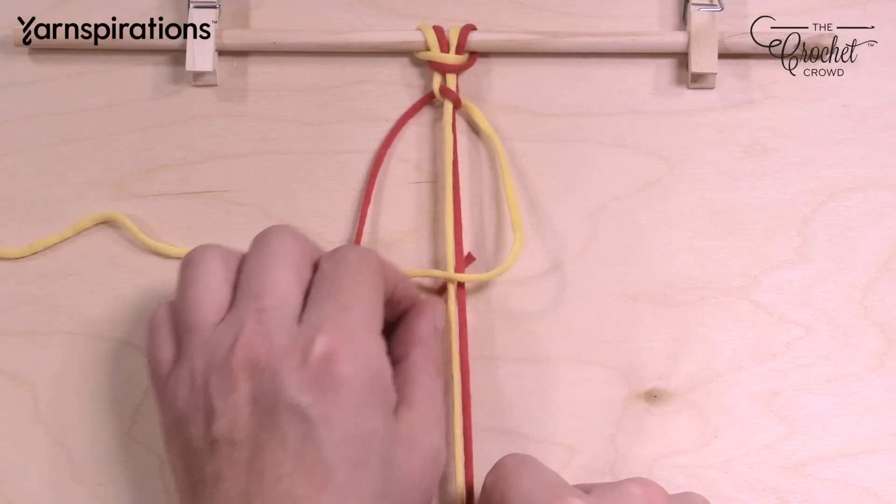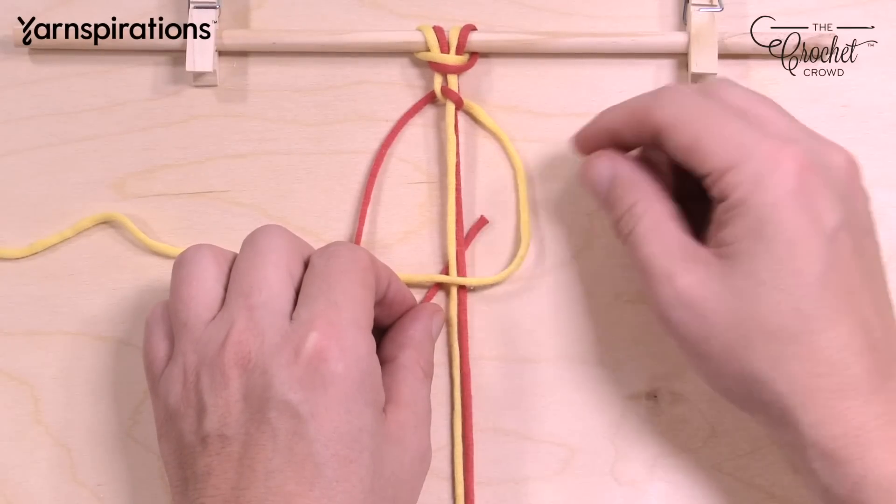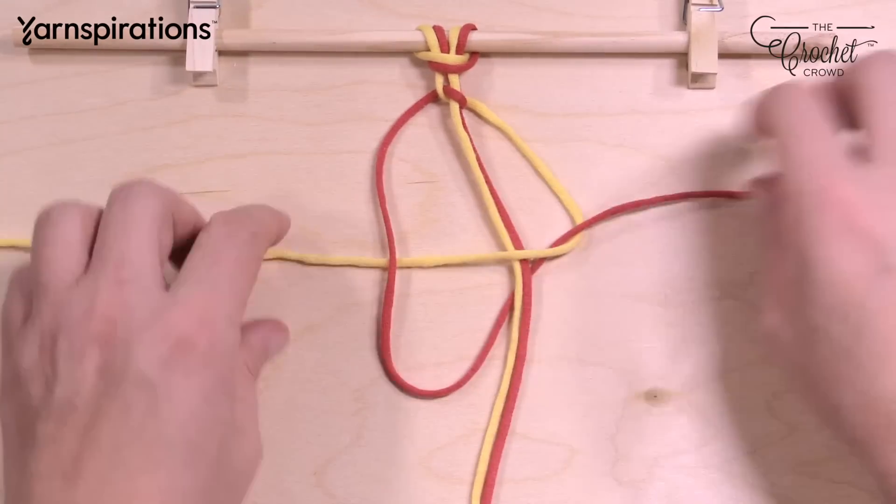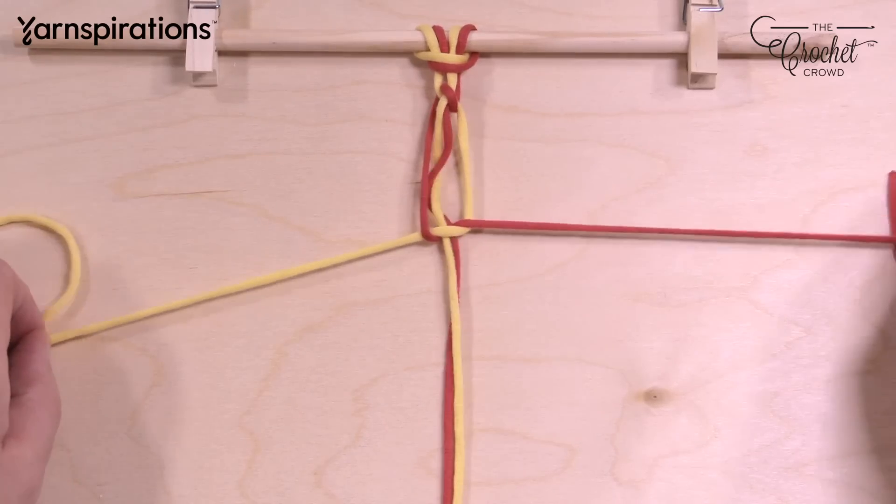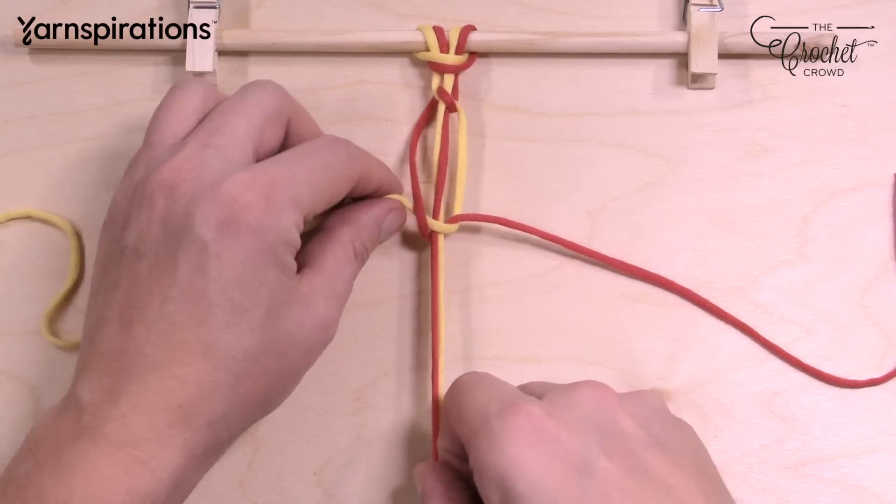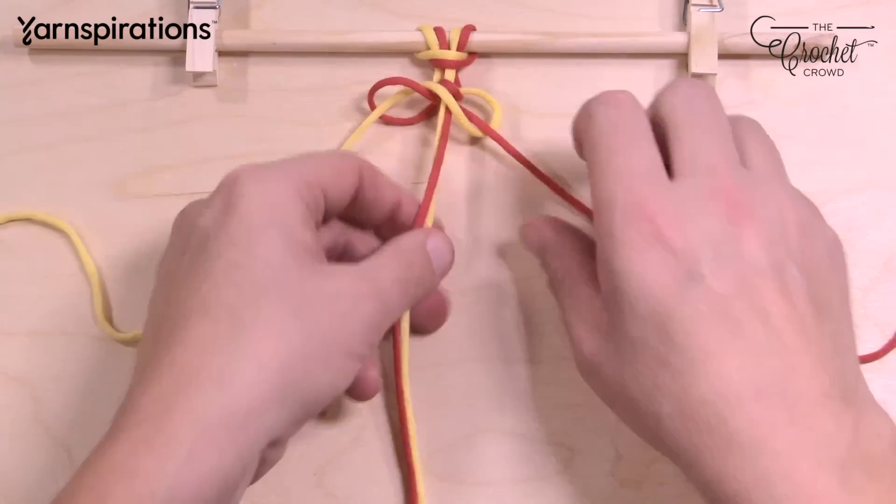Just pick up the center line, come up through this space, and pull through. There's that knot once again. Because of the way it's knotting, it creates a spiral when you do it.